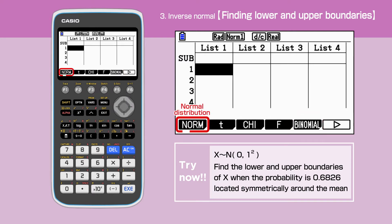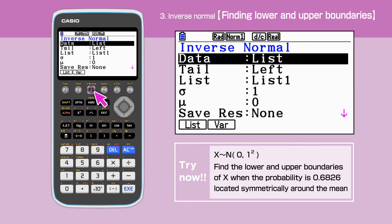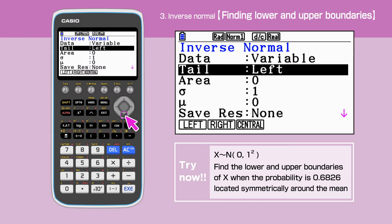Press F1 to select the normal distribution. Press F3 to select inverse normal. Press F2 to set data to variable. And for the tail, press F3 to select central.